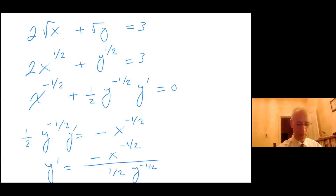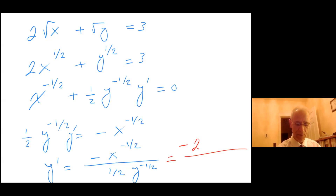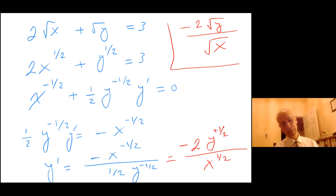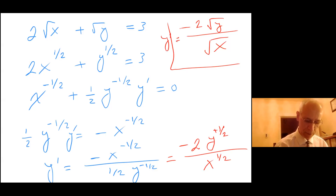If I multiply numerator and denominator by two, the one half goes away and y to the negative one half moves to the top, becoming positive, and x to the positive one half stays in the denominator. So y prime equals minus 2 square root of y over square root of x.